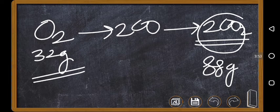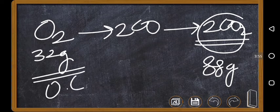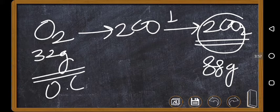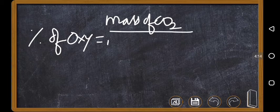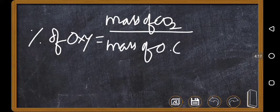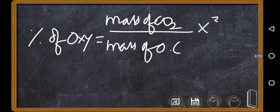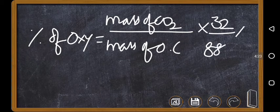32 grams is from our organic compound, not all, because the remaining is coming from I2O5. So when you are writing the formula carefully, we need to write: percentage of oxygen equals mass of CO2 formed divided by mass of organic compound initially, times 32 by 88, times 100.